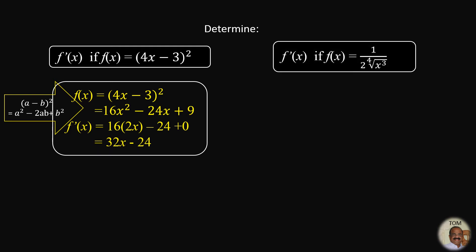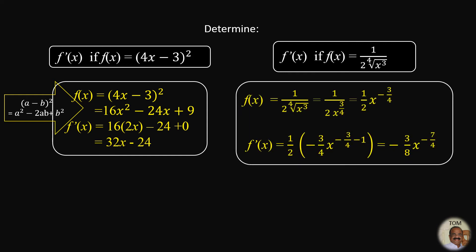A trickier question: f(x) = 1 over the fourth root of x³. We change it to exponential form: the fourth root of x³ is x to the power 3/4, so the term becomes (1/2)x⁻³/⁴ after moving to the numerator. Applying the rule: derivative is (1/2) times (−3/4) times x to the power −3/4 minus 1. Simplifying gives −3/4 times x to the power −7/4.